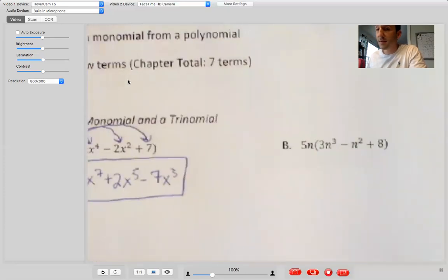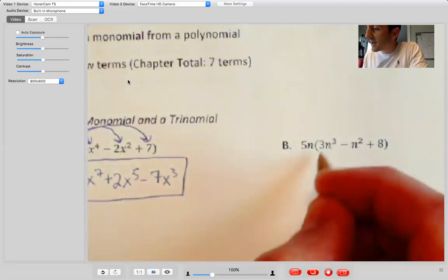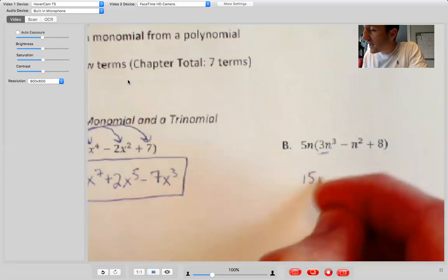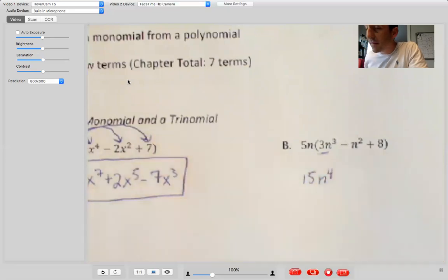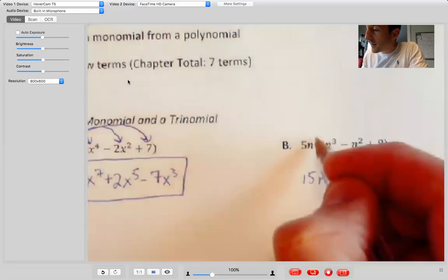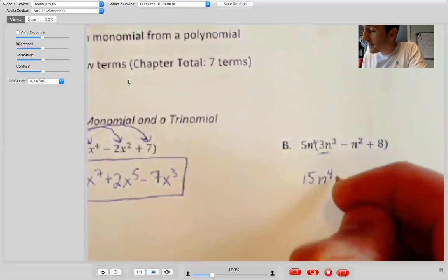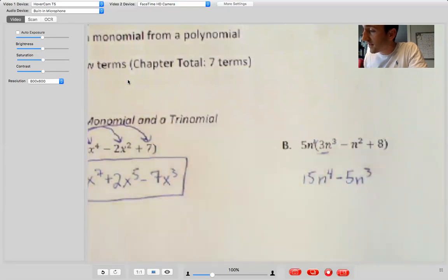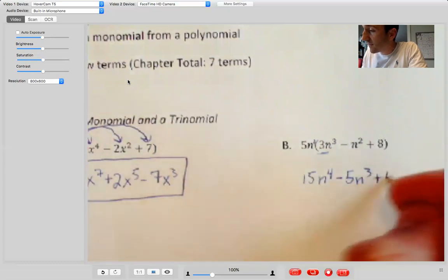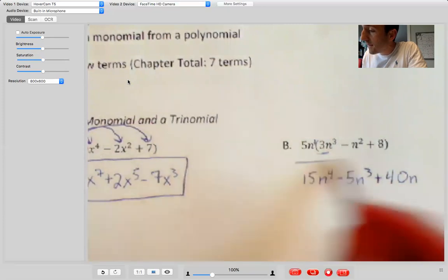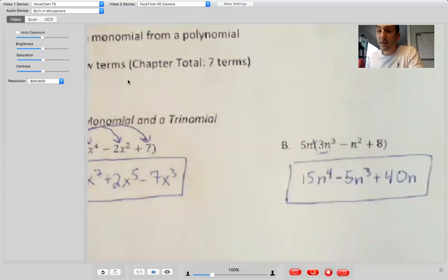All right, next example. I'll show that as well. 5n times 3n cubed is 15n to the 4. Okay, it might be helpful there to remember that n is also n to the 1. Okay, and then 5n times negative n squared is negative 5n cubed or n to the 3rd. And then 5n times 8 is plus 40n. All right, so that's that.